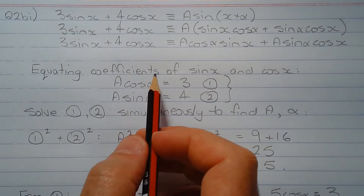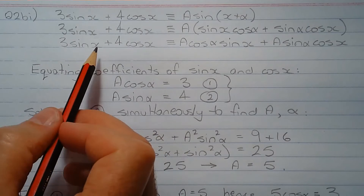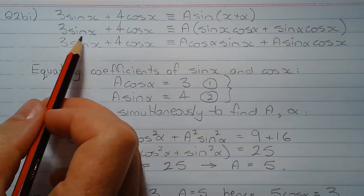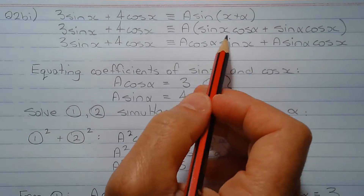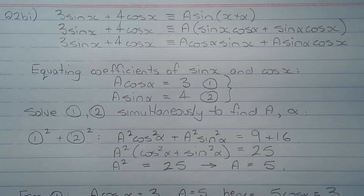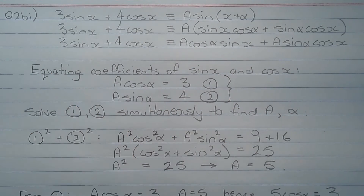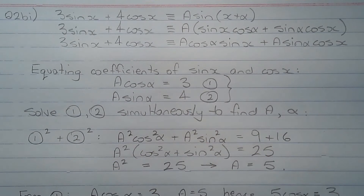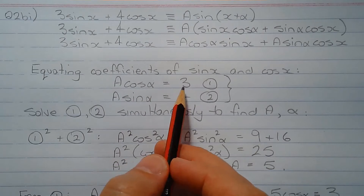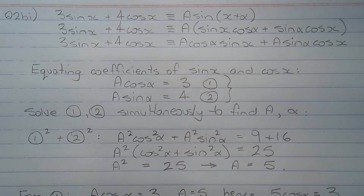The next step is to equate the coefficients of sin x and cos x. The coefficient of sin x on the left hand side equals the coefficient of sin x on the right hand side. So A cos α must equal 3 and A sin α must equal 4. These are written as two equations: equation 1: A cos α = 3, and equation 2: A sin α = 4.